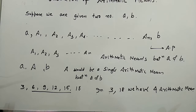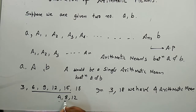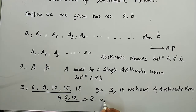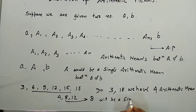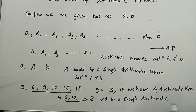And if we have three numbers like 4, 8, 12, then 8 is a single arithmetic mean between 4 and 12.